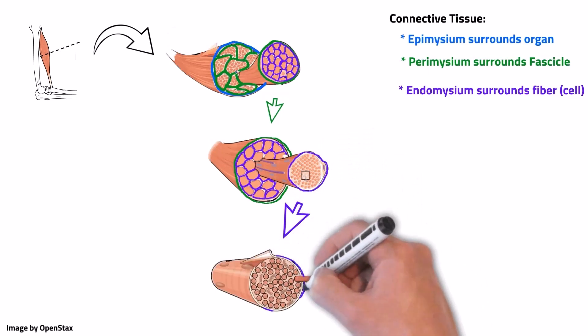The muscle fiber is a cell, so it has a plasma membrane. The plasma membrane of a skeletal muscle fiber has a special name. It's called the sarcolemma, which will draw deep to the endomysium.